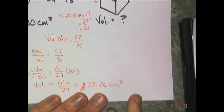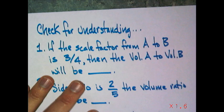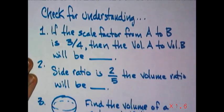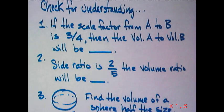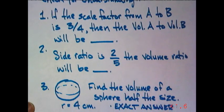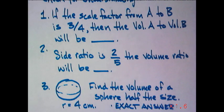So, today's nice short lesson. And here's your problems for today. If the scale factor from A to B is three-fourths, then the volume of A to the volume of B will be blank. The side ratio is two-fifths. The volume ratio must be what?